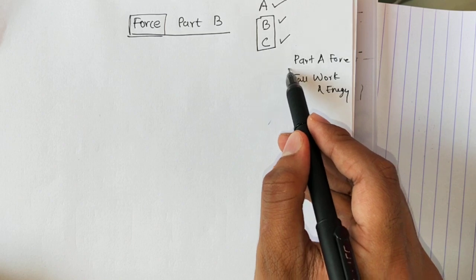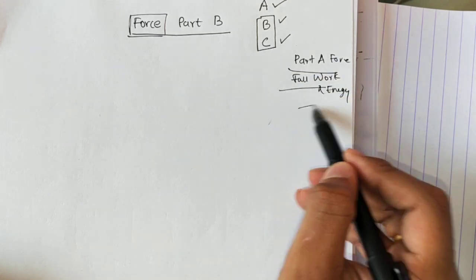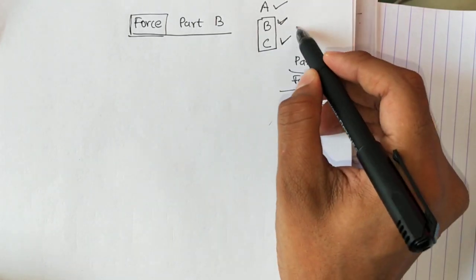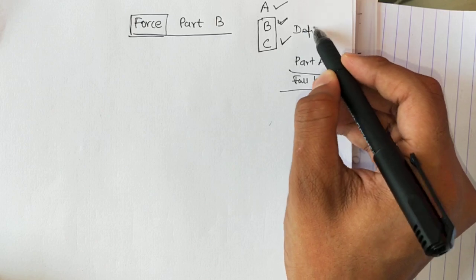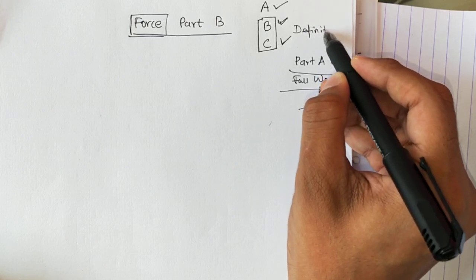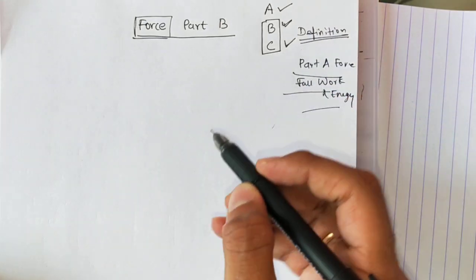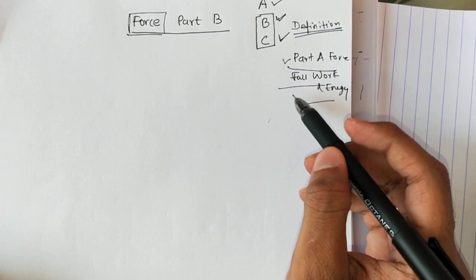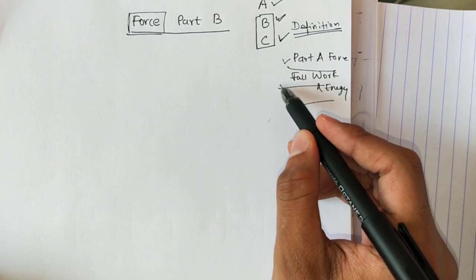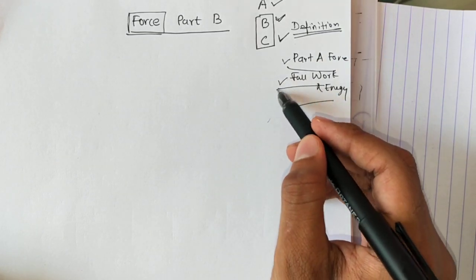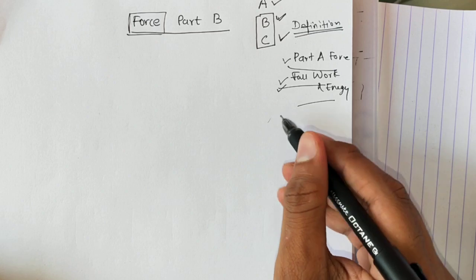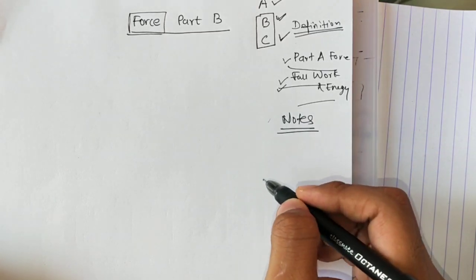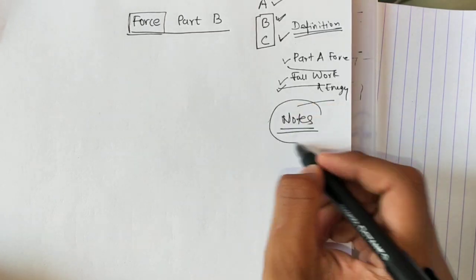For the test, this is to be focused upon. For Part B and C, only learn the definitions and markings — that would be enough because their weightage is less. But Part A of force is very important, and the work and energy full chapter is very important. I have also sent you the notes in the group; do read them.